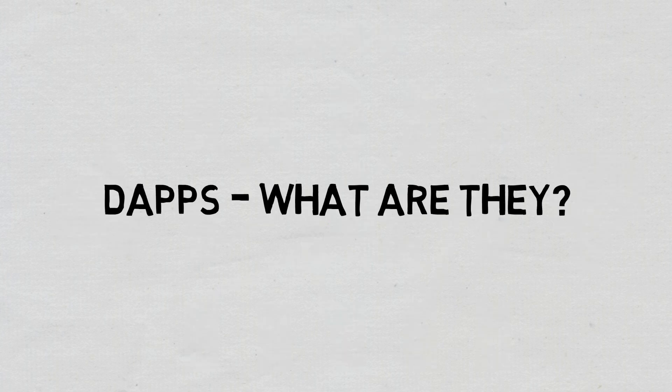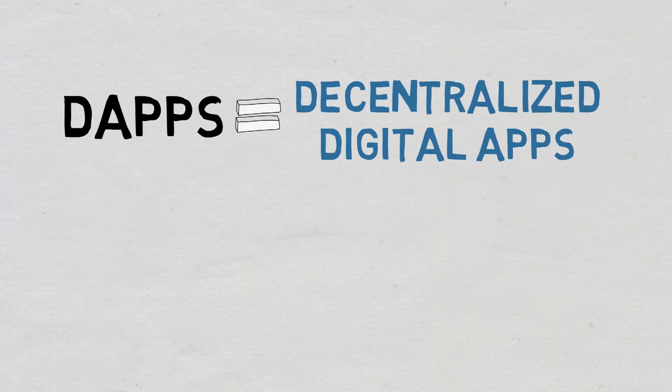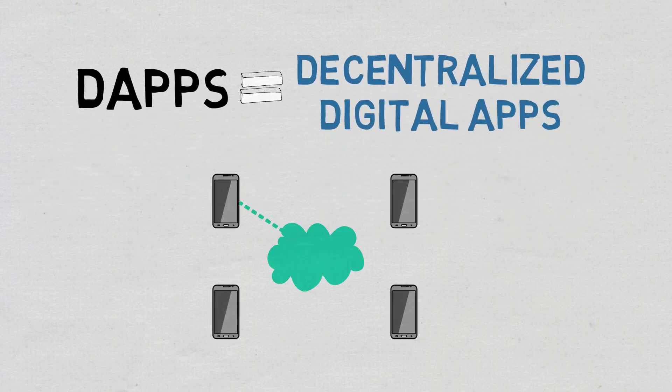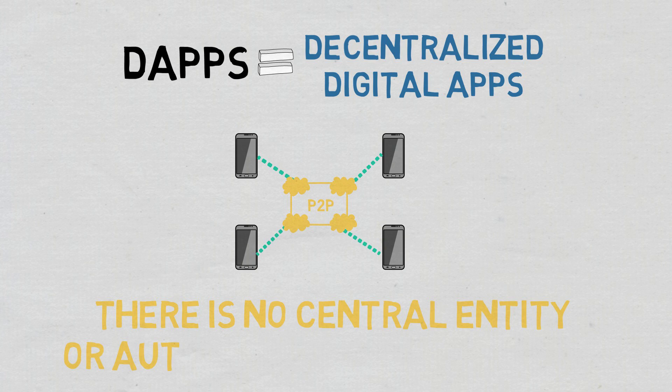DApps. What are they? DApps are decentralized digital apps and in some ways they work like normal apps. The main difference between them and centralized apps, though, is that they run on a blockchain or peer-to-peer network of computers instead of a single computer. This means there is no central entity or authority to control them.